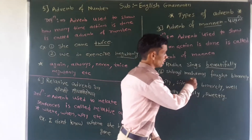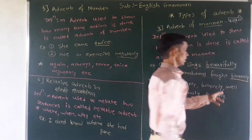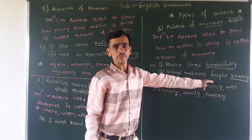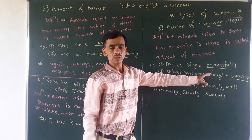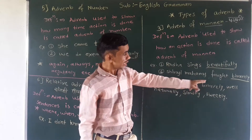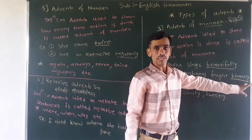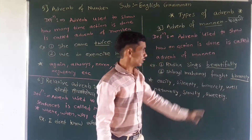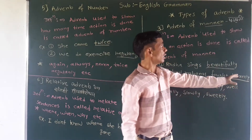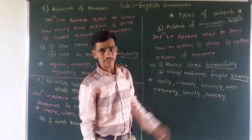Second example: Shivaji Maharaj fought bravely. Shivaji Maharaj fought means Shivaji Maharaj laden. Bravely — brave Krishna. So 'beautifully' and 'bravely' are words that show the adverb of manner.